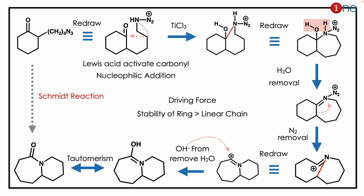The amine attacks the carbonyl. You have a new five-membered ring, and since the hydroxyl and nitrogen are nearby, water removal is possible. This gives alkene formation with N2+, and N2+ is a good leaving group.